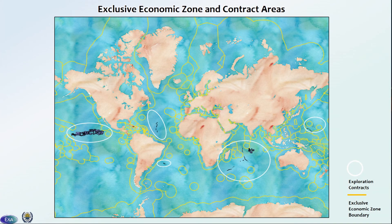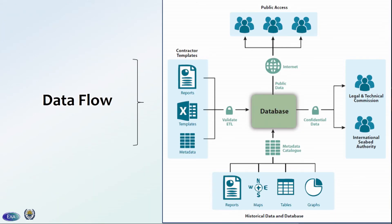This is a map of the exclusive economic zone — the boundary between national and international jurisdiction throughout the world's oceans. In those white circles are the different exploration contracts happening around the world right now. There's a lot of environmental data associated with all of those polygons. The ISA refers to this area outside of national jurisdiction as 'the area.' To understand our project, it's important to understand the flow of data throughout the whole system, with our central data repository — our geodatabase — in the middle.